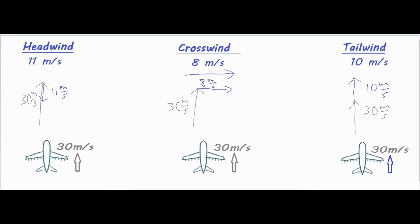You don't have to get too caught up in the order — just be careful to use the tip-to-tail method correctly. Our answer is called the resultant. The resultant is drawn as a vector from the beginning point to the end point — from there to there, there to there, and from here all the way up.